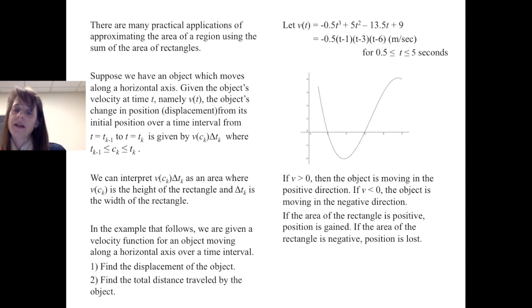If the area of the rectangle is positive, then we can say that position is gained. If the area of the rectangle is negative, then position is lost. In other words, the object might be backtracking.